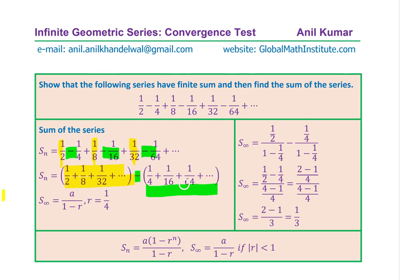We can easily find the sum of both series individually using the formula a divided by (1 minus r), and substitute the values of a and r. For series one, a equals 1/2 and r equals 1/4. For the second series, a equals 1/4 and r equals 1/4. Substituting these values, the sum of the infinite series for the first one is: (1/2) divided by (1 minus 1/4). For the second one it is: (1/4) divided by (1 minus 1/4).